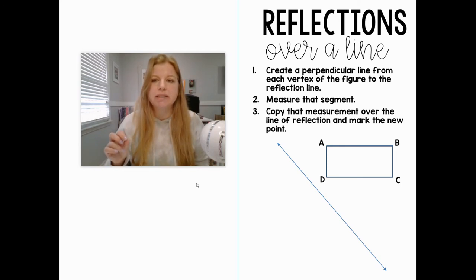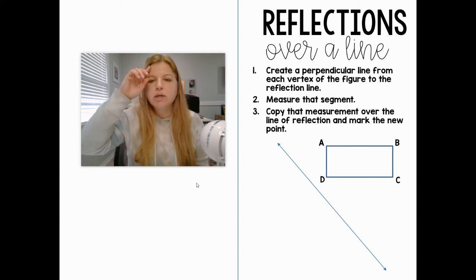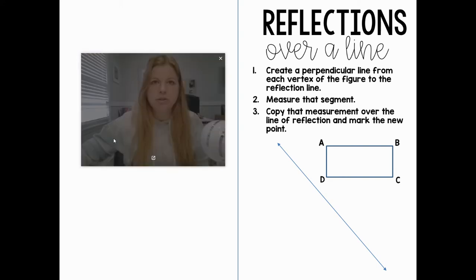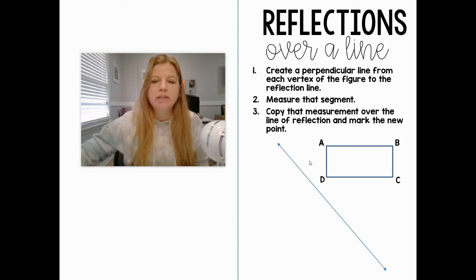If I wanted to reflect this rectangle ABCD, what I have to do is create a perpendicular line from each vertex of the figure to the reflection line. Basically, I need to take a ruler and connect point A to my reflection line, but it's got to be a perpendicular line. You may want to grab a protractor, or if you have a corner that's always going to be a 90-degree angle.